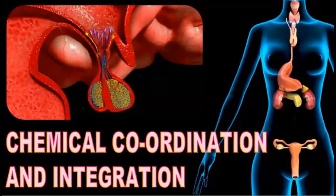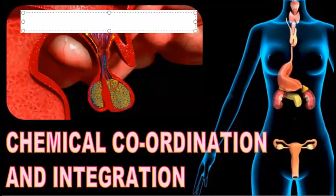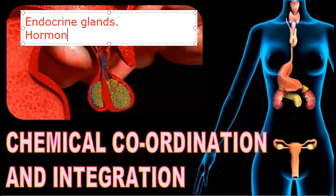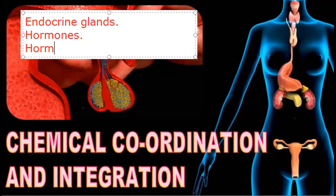Hello students. Welcome to Easy Biology Tutorials. Today we are going to start with the new chapter and this is Chemical Coordination and Integration. In this chapter we are going to read about the endocrine glands first, then the hormones, then the hormonal action. With this, our chapter — the last chapter of Human Physiology — is ended. So let us start with Chemical Coordination and Integration.